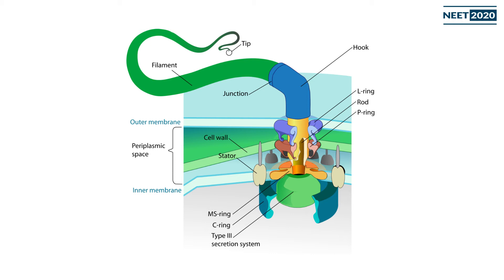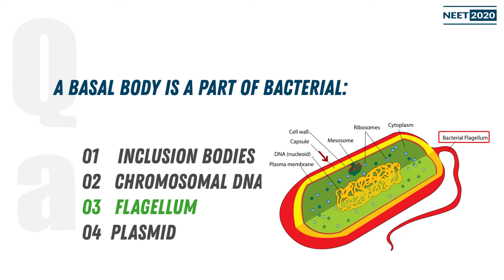The basal body is anchored on one side and in the cell wall. There are some rings in this structure. This structure is the bacterial flagellum. When we talk about basal body in the sense of bacteria, it is associated with basically what is called the flagellum.